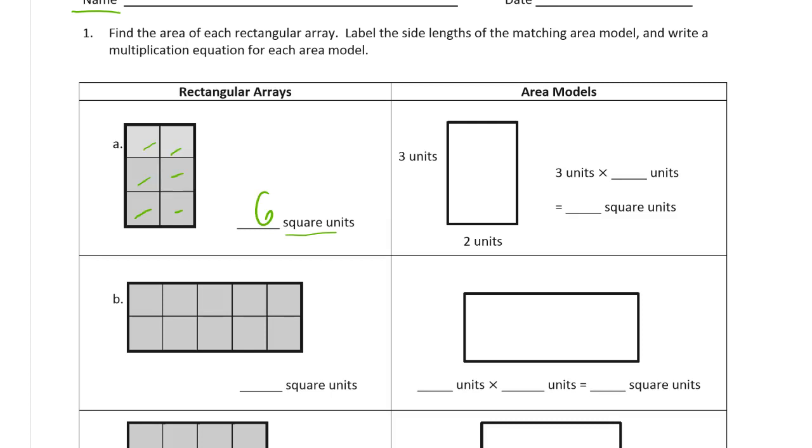And here we have 3 units times the other side we have is 2 units. Right, because we know that this is 3, this is 3, and this is 2, that's 2. So when I say the other side, I'm talking about not the opposite side, the one next to it. So we have sides of 3 and sides of 2. And 3 times 2 is 6.